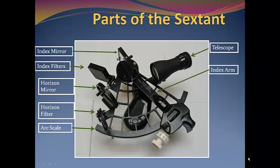The index arm is a movable arm that is used to move the index mirror so that you can align it with the body and the horizon. The frame is what everything is attached to.